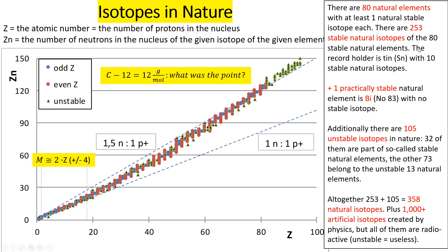When I told you we have 80 natural elements, you might be surprised, because during the previous lecture we discussed 81. The plus one is the so-called practically stable natural element, bismuth — element number 83. Element number 82, lead, contains several stable isotopes, but element number 83 bismuth contains only two unstable isotopes. One is very much radioactive but its content in the Earth's crust is negligible — we call it a trace isotope.